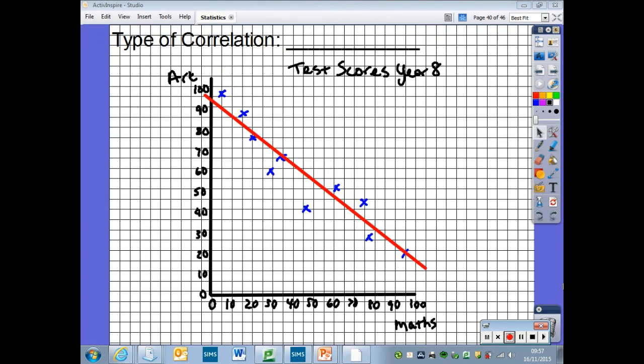Going back to our test scores for Year 8, because there is a line of best fit, it means that there is a correlation. What do you notice about students with high math scores? What do you notice about students with high art scores? The better you do in one subject, the less well you may do in the other. As one result goes up, the other goes down. We call this negative correlation. So we have a negative correlation between the results for maths and art.